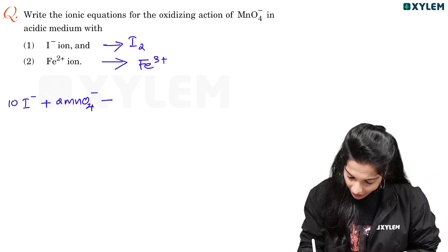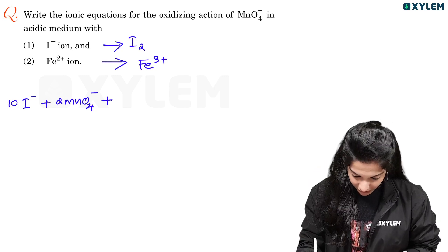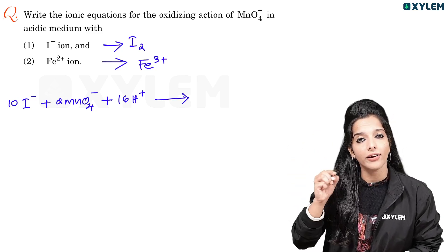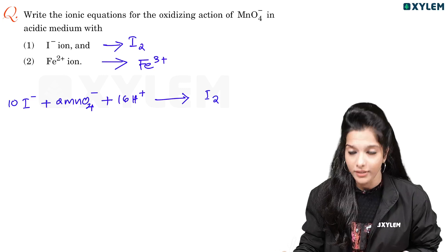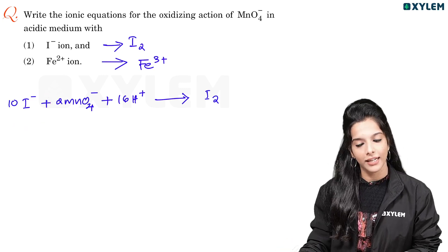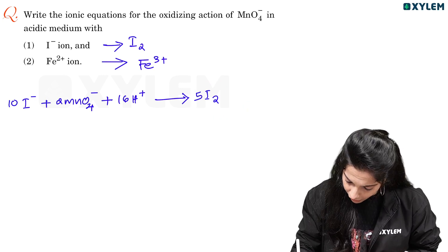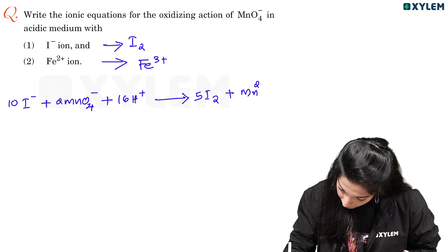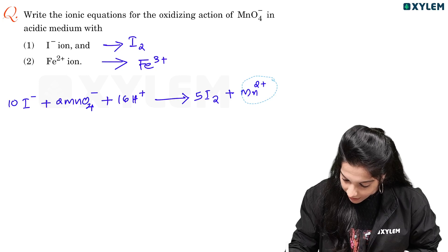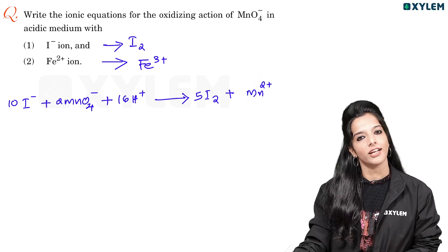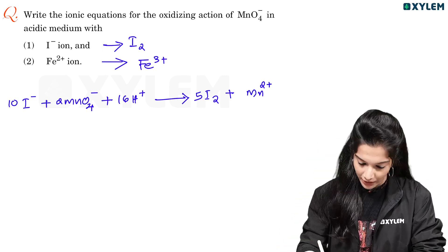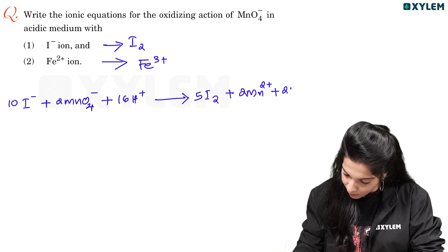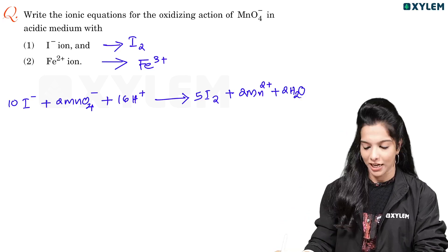2 MnO4-, potassium permanganate, can be oxidized. This medium is acidic, so it is H+. Then 16 H+ gives iodine — this is I2. How many? This is 10, we have 5 I2. Plus 2 Mn2+ — the oxidation state going to Mn2+ is the reduction stage. This gives us the complete balanced equation.